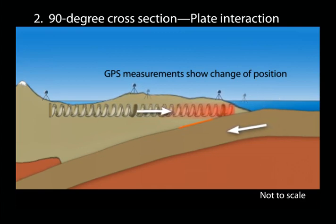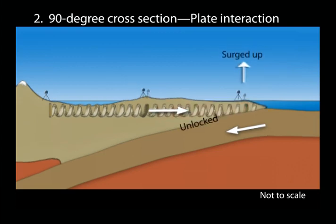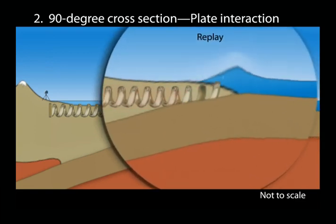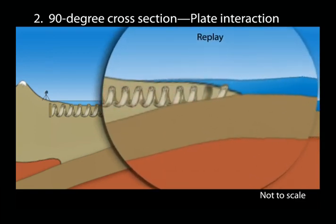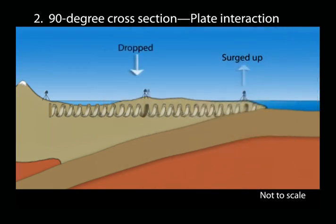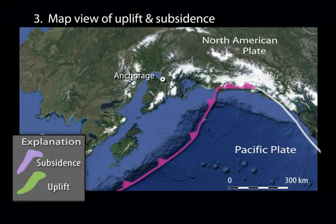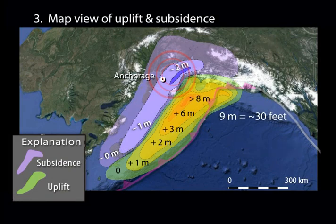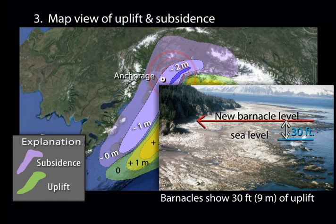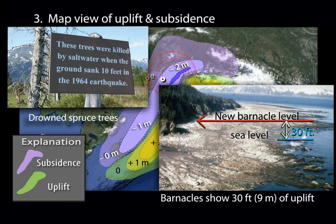In 1964, the force of the converging plates overcame friction and caused the leading edge to lurch seaward, uplifting the seafloor and forming a mound of seawater that spread out as a tsunami. As coastal areas near the trench were uplifted, areas inland dropped. The broad area at the leading edge of the overlying plate rose up as high as 9 meters, as the landward region subsided up to 2 meters, thus raising the shoreline barnacles well above sea level and dropping the inland shoreline below sea level, killing trees and leaving its legacy in ghost forests.